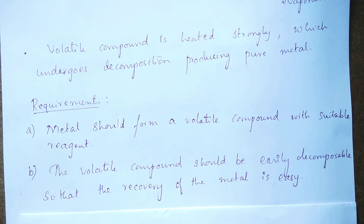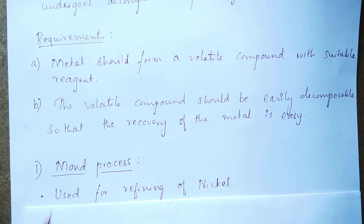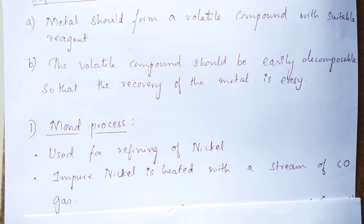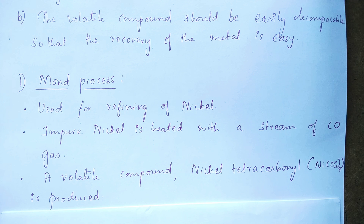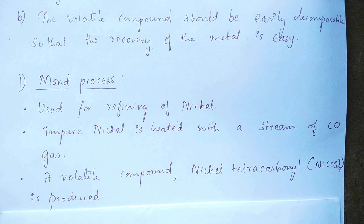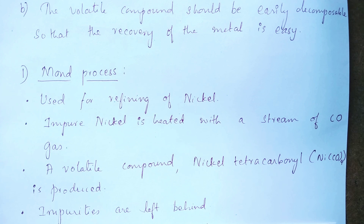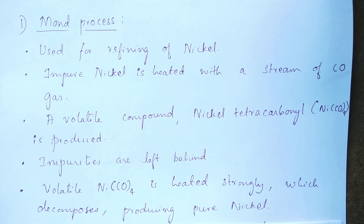The first example of vapor phase refining is the Mond process, which is used for refining nickel. First, the impure nickel is heated with a stream of carbon monoxide gas. The specific reagent is carbon monoxide, and an easily evaporating compound of nickel is formed — nickel tetracarbonyl, with the formula Ni(CO)₄. The impurities do not combine with carbon monoxide and are left behind.